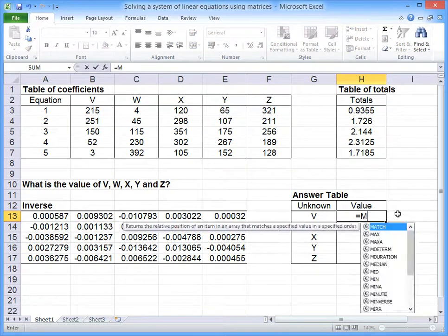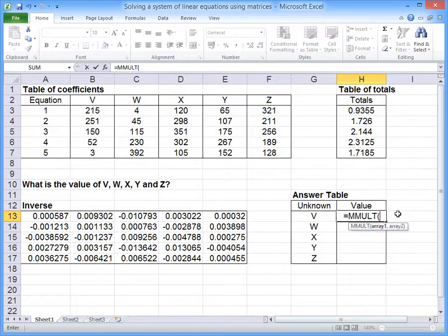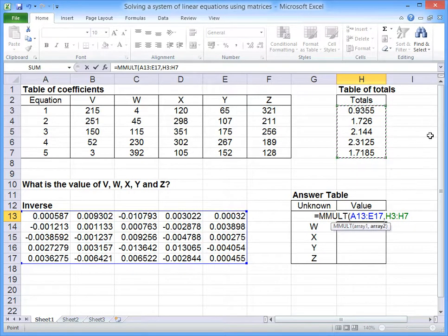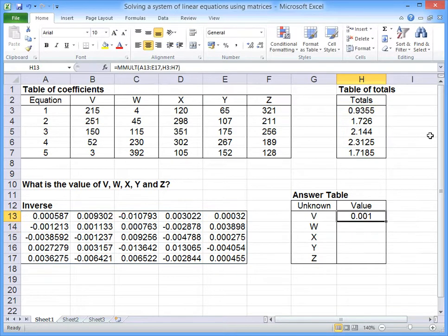To get the answers, we have to multiply two matrices together. So we have MMULT, open brackets, highlight the first matrix, which we have to do the inverse first, press comma, and then we highlight these totals, because that was the second matrix that we had to multiply by, close brackets and press enter.